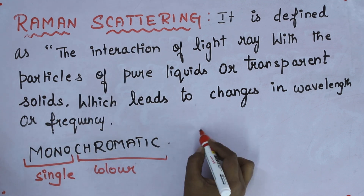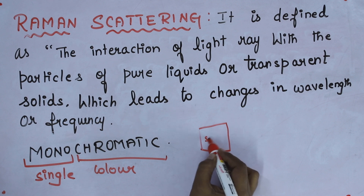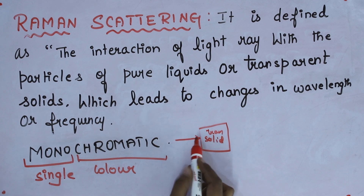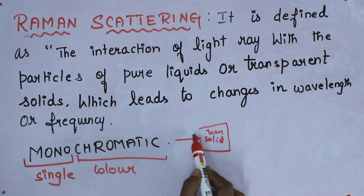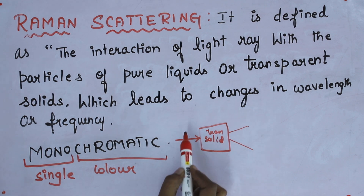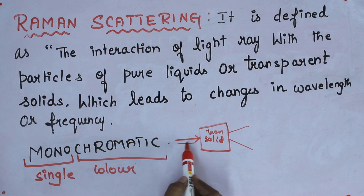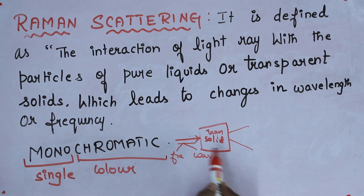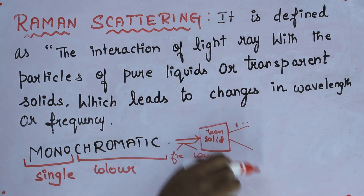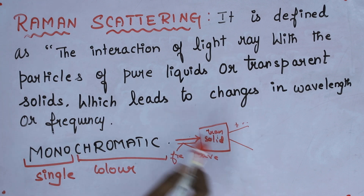Consider this as a transparent solid. You make monochromatic light pass through it. When light passes from one medium to another, the light rays get scattered. When the light ray is incident, it may have one frequency and wavelength. After scattering, there will be changes in the frequency and wavelength. If there are such changes, it is called Raman scattering.